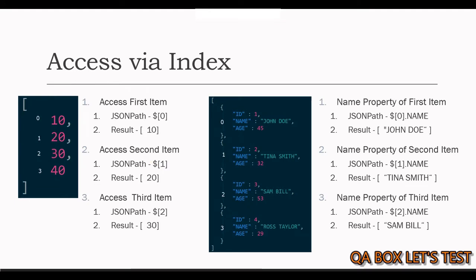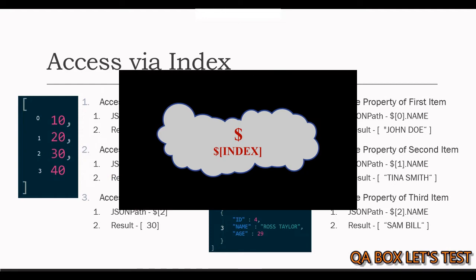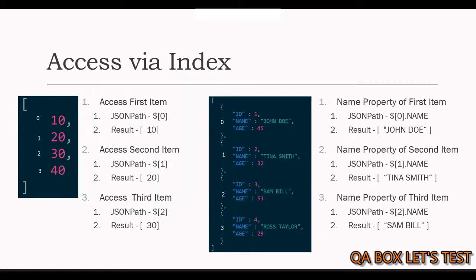Let's access JSON array items using index. We will work on a very simple array of numbers. As we know, index starts with 0 and the root element is denoted by dollar. So we write dollar followed by opening and closing square brackets, and within these square brackets we mention the index of the item we would like to access. For the first item we say 0, for the second item we say 1, and so on.